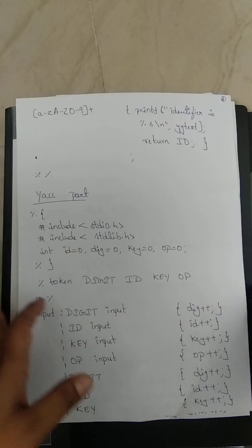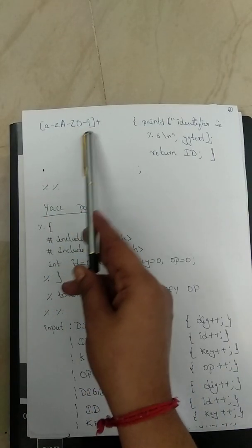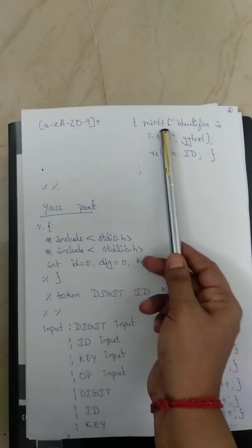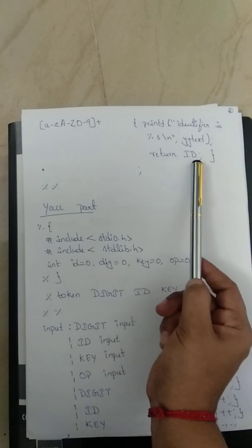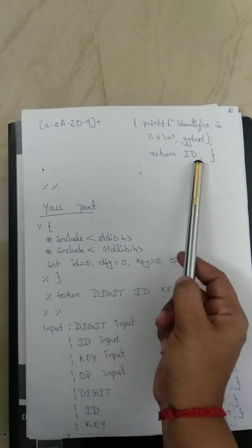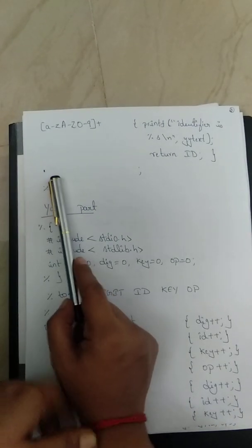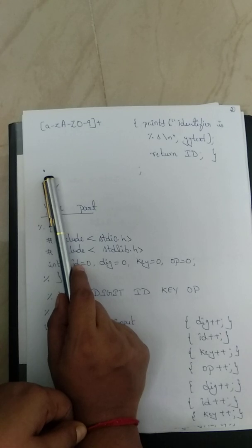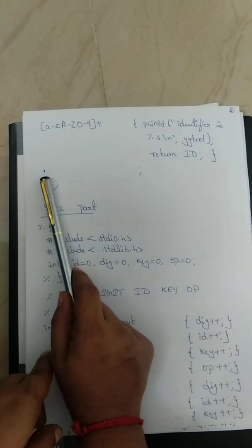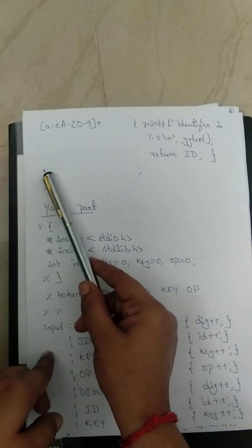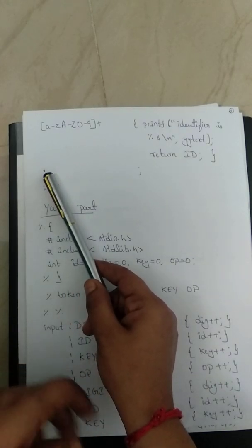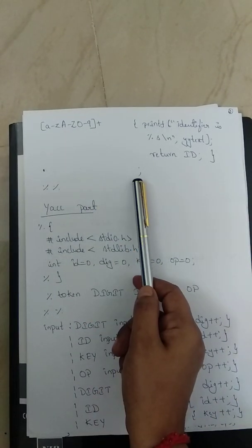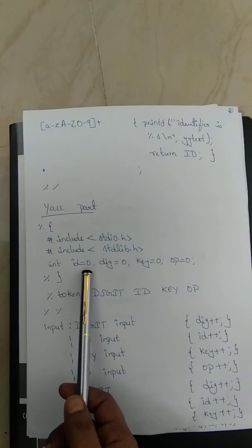The last rule is for identifiers. Write the regular expression for identifiers, specify the action as printing 'identifier', and return the token ID. After that, a dot (.) is written — this is the echo macro. When any character not matched by the above regular expressions is encountered, do nothing.